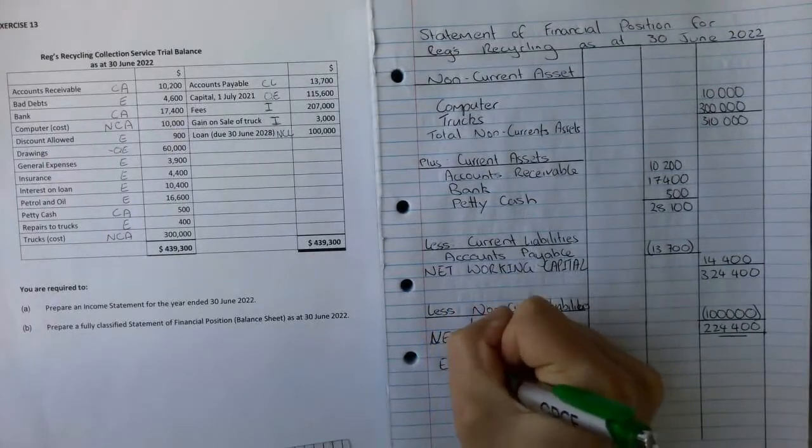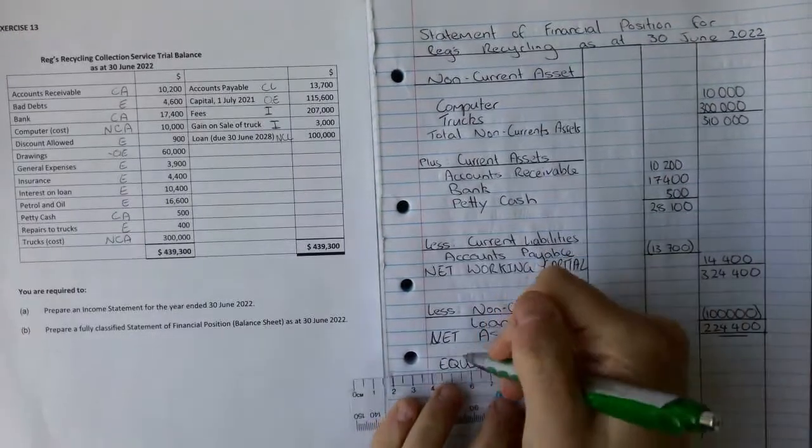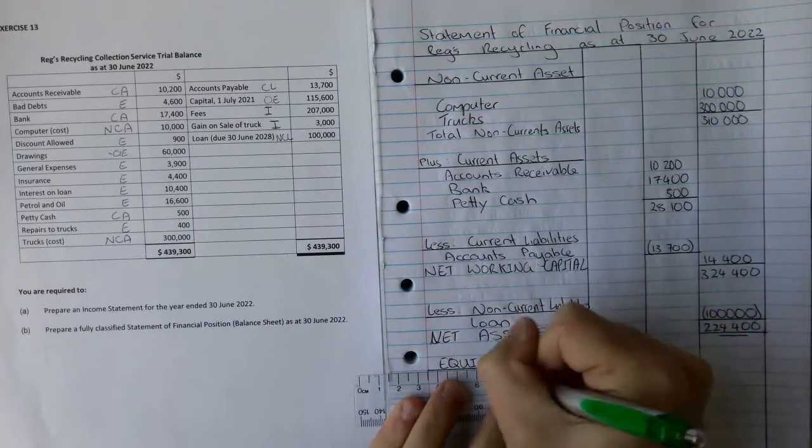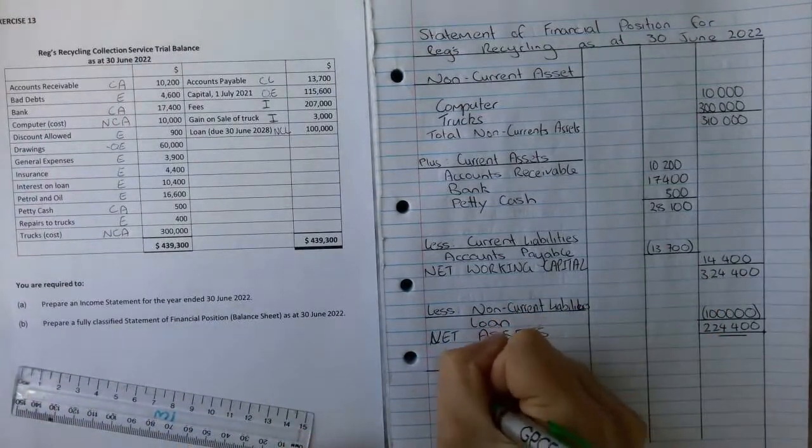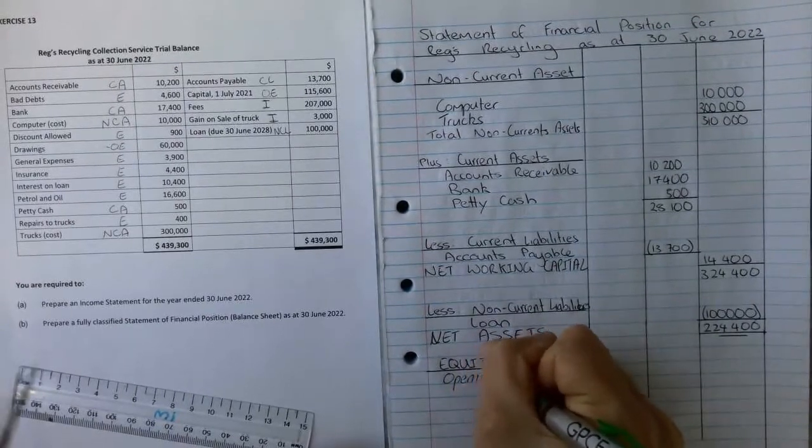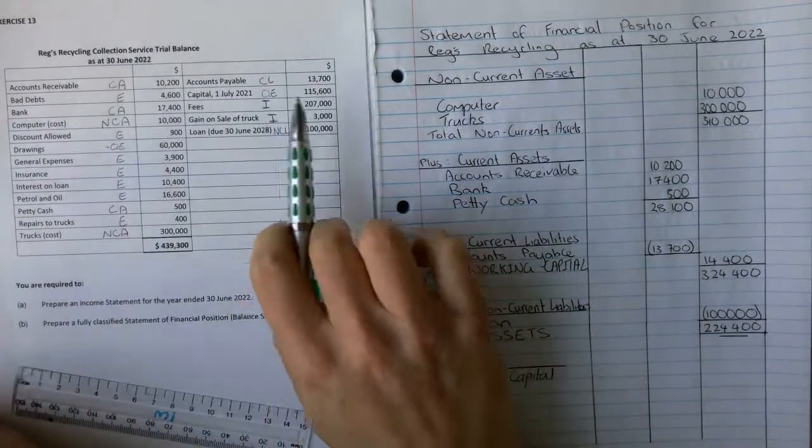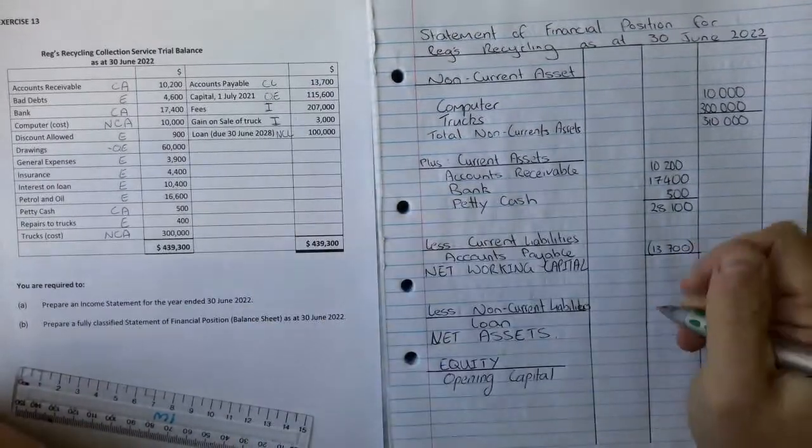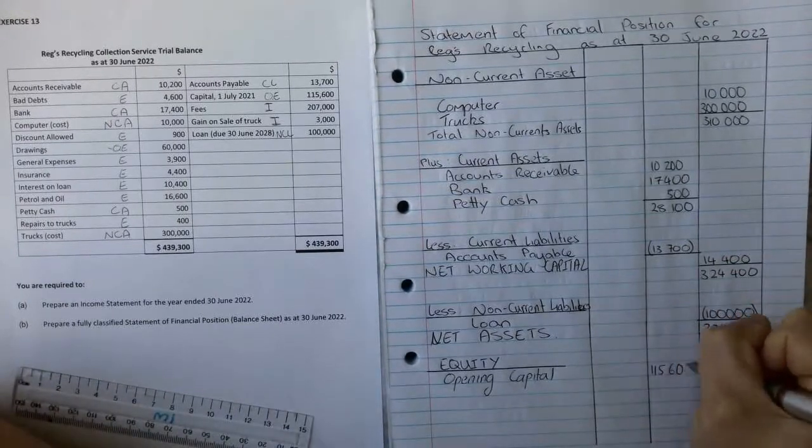Equity is what we're going to call this. We're going to underline it because that's the name of this section. We're going to start with opening capital and we do the same thing every single time. Opening capital. As we can see, we've been given that figure over here which is $115,600.